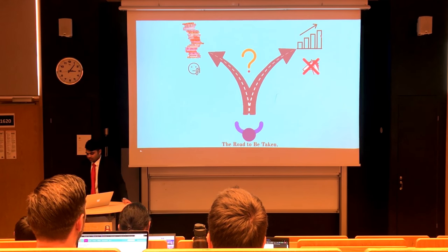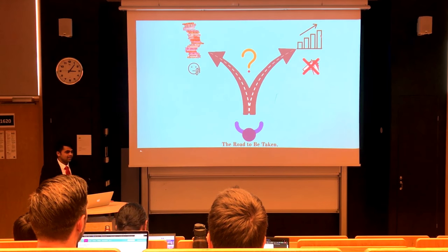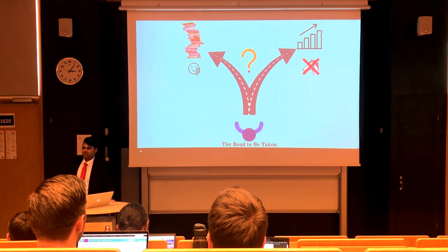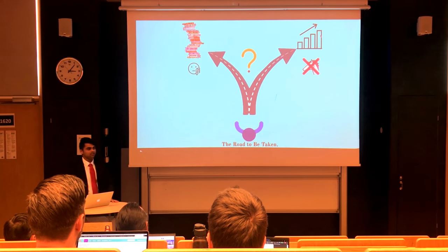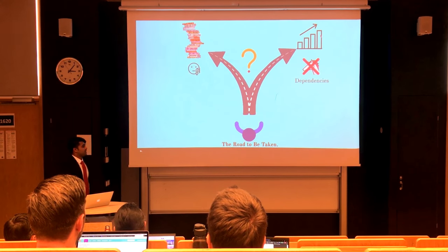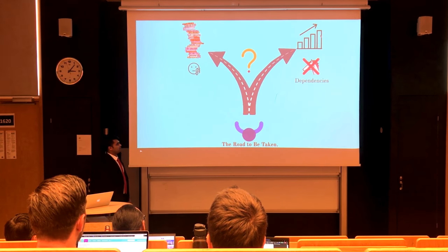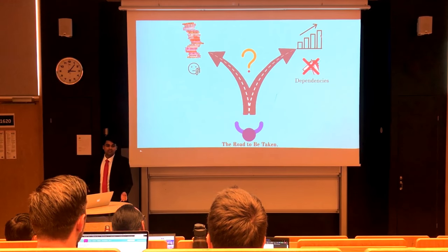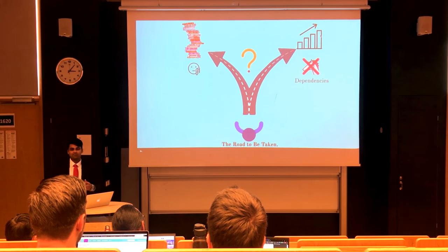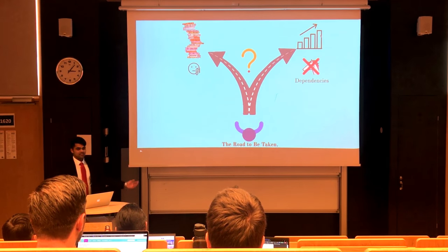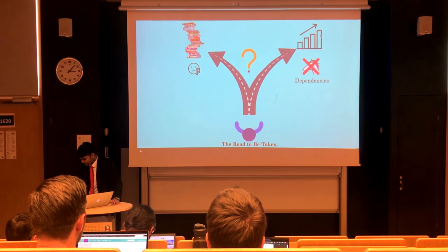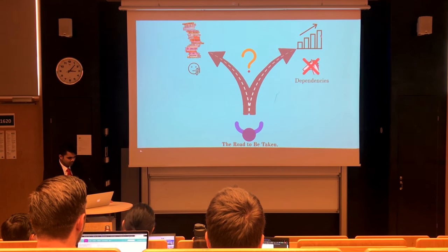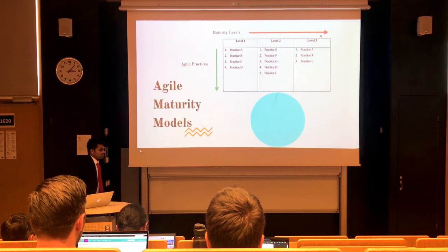Why not? Because these 15 practices cannot be implemented randomly. You can't arbitrarily pick 5 and then 10, because these practices are not independent — they have dependencies between them. Beck, the creator of XP, suggested that some practices reinforce each other to make each other better. This is the current state of agile.